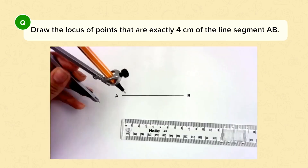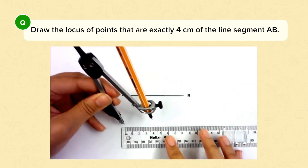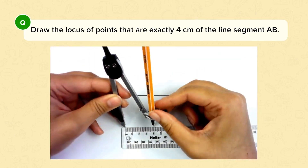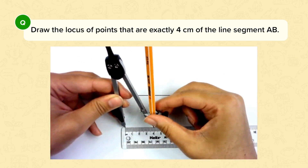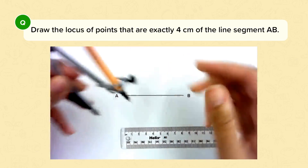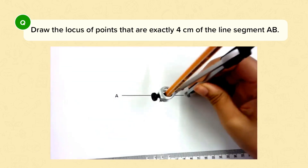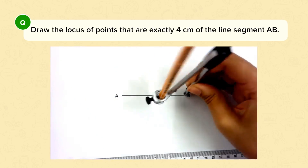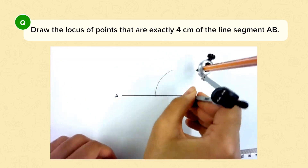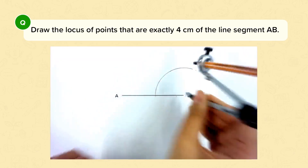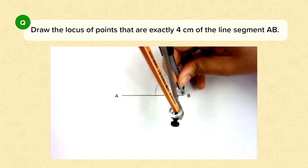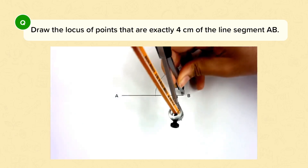Now we'll construct the locus of points that are exactly four centimetres from the line segment AB. We're going to start by opening the compasses to four centimetres. We're going to need a circle on each end. Remember, this locus looks like a semicircle on either end of the line, and then a straight line joining those two.